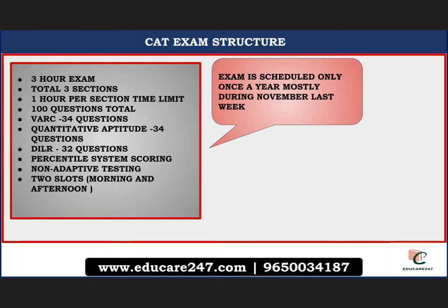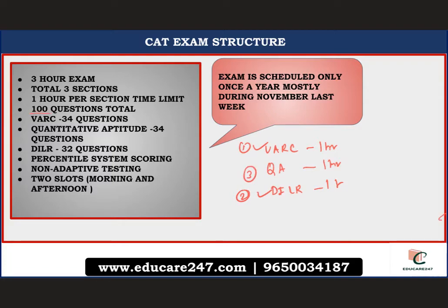Let's look at the CAT exam structure. It is a total three-hour exam with three sections: VARC (Verbal Ability and Reading Comprehension), Quantitative Aptitude, and DILR (Data Interpretation and Logical Reasoning). Each section is given a one-hour time limit. The order is VARC, then DILR, then Quants. There are a total of 100 questions — VARC has 34, Quants has 34, and DILR has 32. A percentile system is used for scoring.